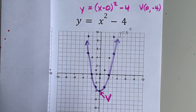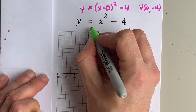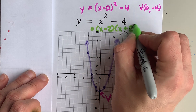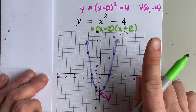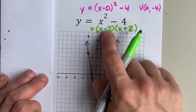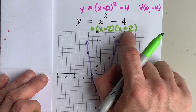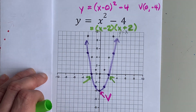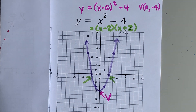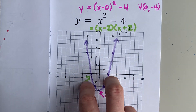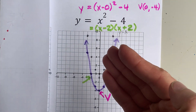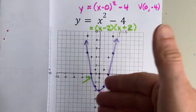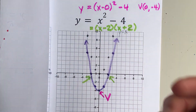I also want to point out that this factors by difference of squares. It factors to (x minus 2)(x plus 2), which tells me the x-intercepts are positive 2 and negative 2. And look — there's an x-intercept at 2 and at negative 2. All those points — the vertex and the x-intercepts — could have been plotted without doing the translation. But the translation also worked and gave you the same points.